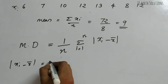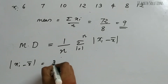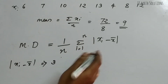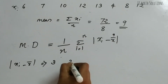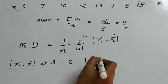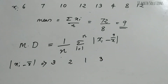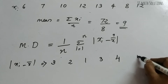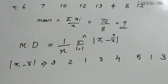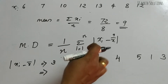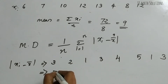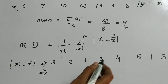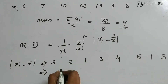So: 6 − 9 = −3, absolute value is 3. Then 7 − 9 gives absolute value 2. Then 10 − 9 is 1. Then 12 − 9 is 3. Then 13 − 9 is 4. Then we get 5, 1, and 3 for the remaining observations. The sum of these deviations is 3 + 2 + 1 + 3 + 4 + 5 + 1 + 3 = 22.